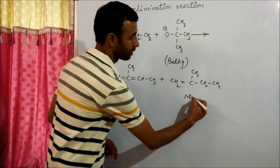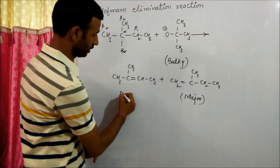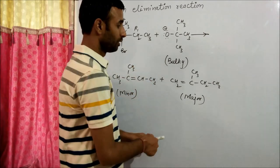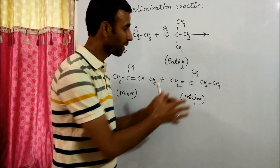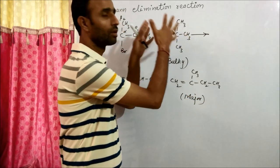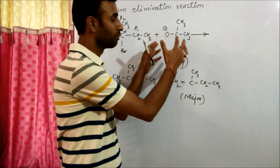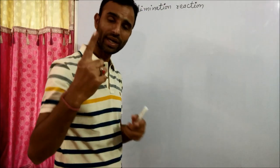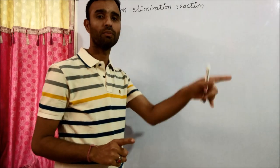That's why the less substituted alkene is the major product and the more substituted is the minor product. The least substituted alkene is formed as the major product when the base is bulky. This is Case 1: Hofmann elimination takes place when the base is large in size.